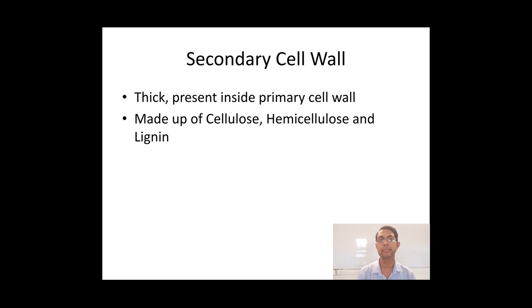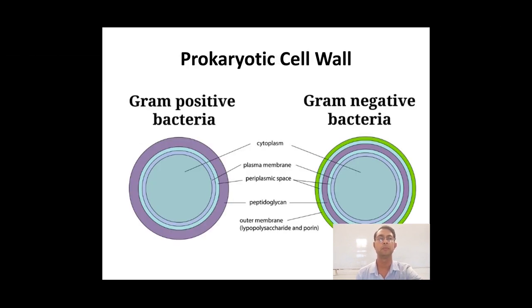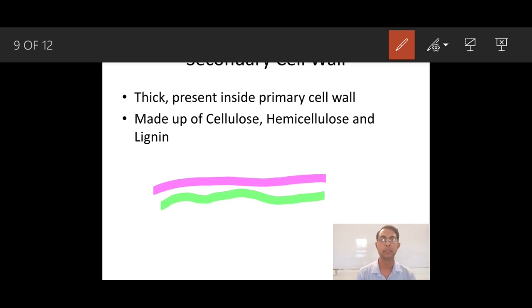The secondary cell wall is thick and is present inside the primary wall. It is made up of cellulose, hemicellulose, and lignin — corresponding to the S1, S2, and S3 layers. These three molecules combine to form the secondary cell wall, making it thick. The secondary cell wall lies inside the primary cell wall: the primary wall appears first, and later in development, the secondary cell wall appears.